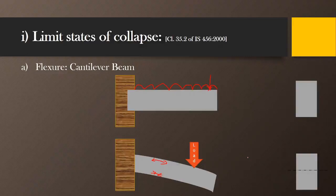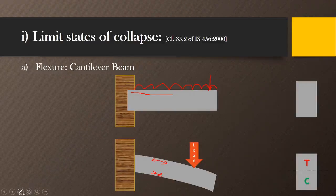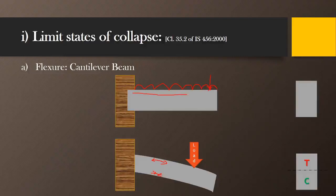The exact reverse conditions exist compared to a simply supported beam. In a simply supported beam, tension is at the bottom and compression is at the top. Here, tension is at the top and compression is at the bottom. Since we must provide reinforcement in the tension zone, for cantilever beams we normally provide reinforcement in the top portion to avoid the limit state of collapse due to flexure.